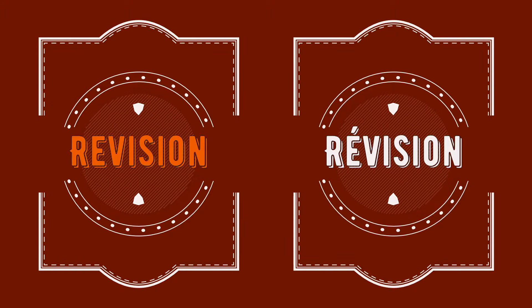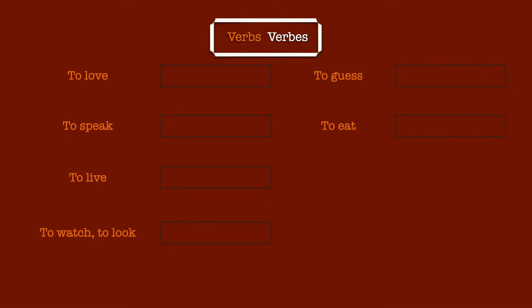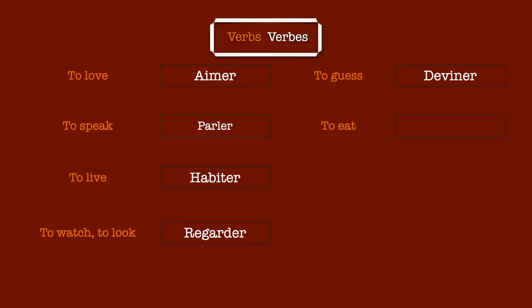So now we arrive at the last part of the video, the revision section. Let's start with a lovely verb, the verb 'to love.' In French, we say 'aimer.' 'To speak' is translated as 'parler.' 'To live' is translated as 'habiter.' Don't forget the H at the beginning even if we don't pronounce it. 'To watch' and 'to look' have the same translation in French, which is 'regarder.' Can you guess how to say 'guess' in French? 'Devinez.' And the last one, 'to eat' — 'manger.'